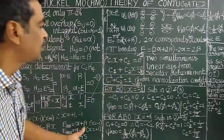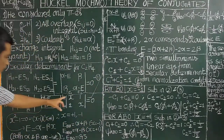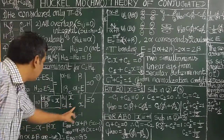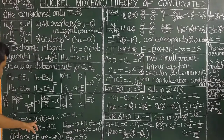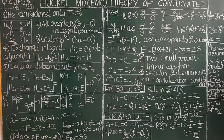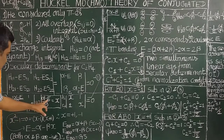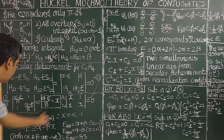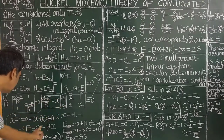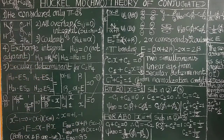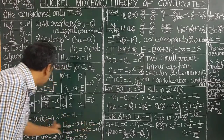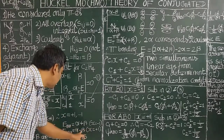Solving the secular equation x squared minus 1 equals zero gives x = +1 or x = −1, two solutions. Since alpha minus E divided by beta equals x, the energy E equals alpha minus beta·x. Substituting the two x values gives E1 = alpha + beta and E2 = alpha minus beta.